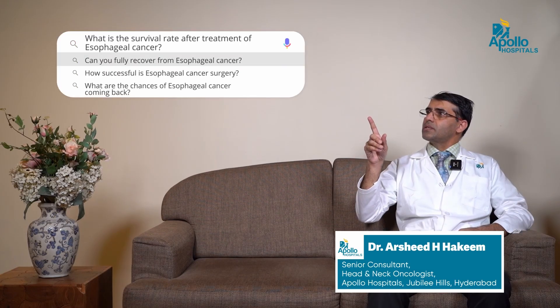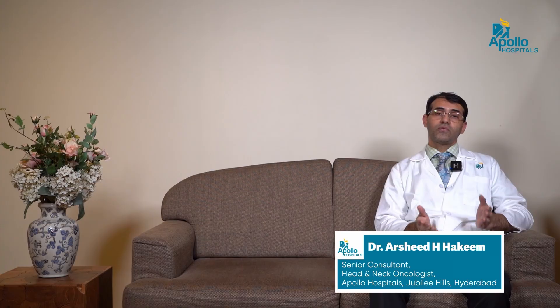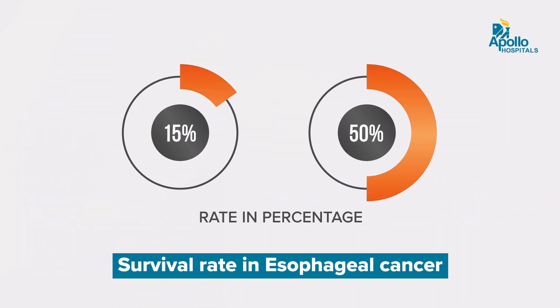What is the survival rate after treatment of esophageal cancer? Esophageal cancer has a poor prognosis. Taking all stages into consideration, the survival rate varies from around 15 to 50 percent. Lower stage means higher survival, around 50 percent, while higher stage means survival decreases drastically.